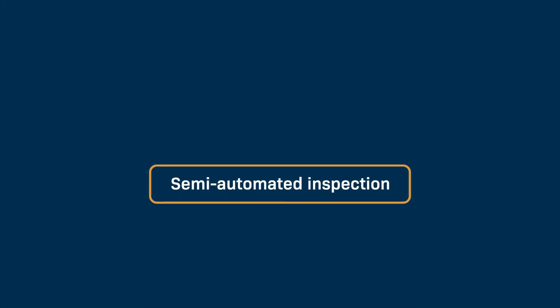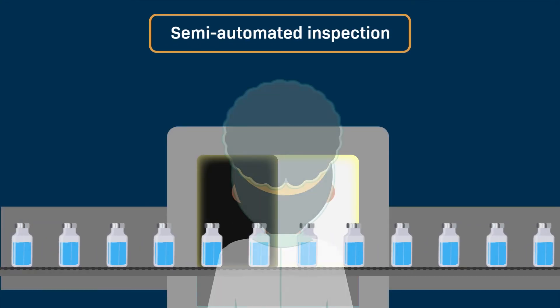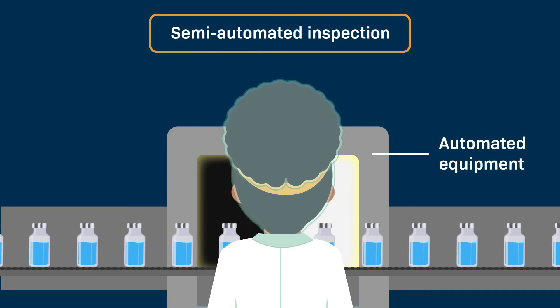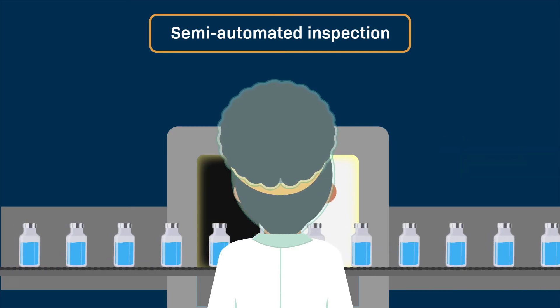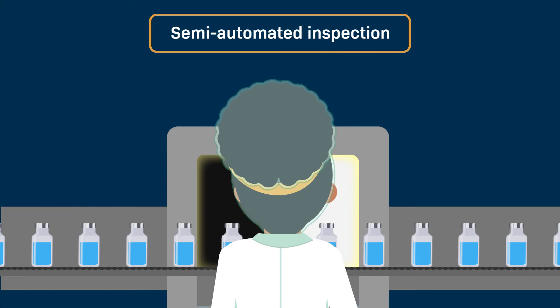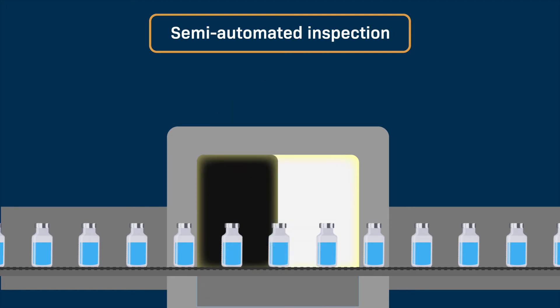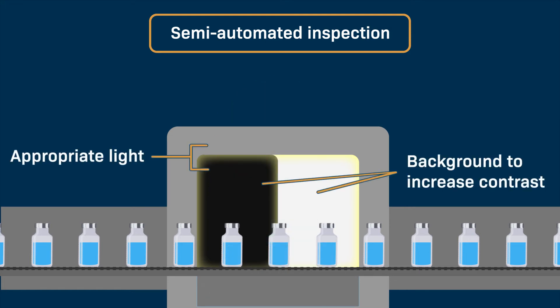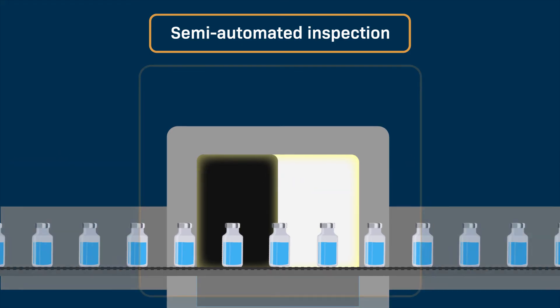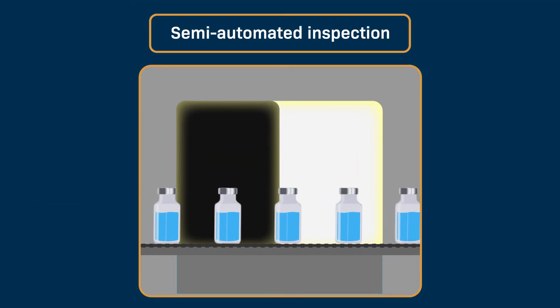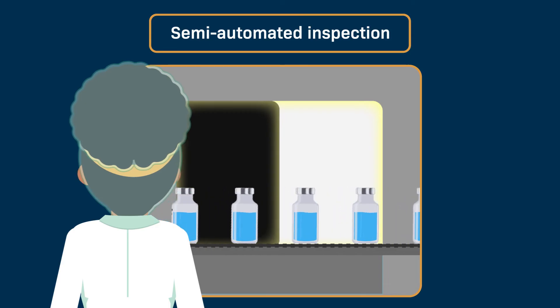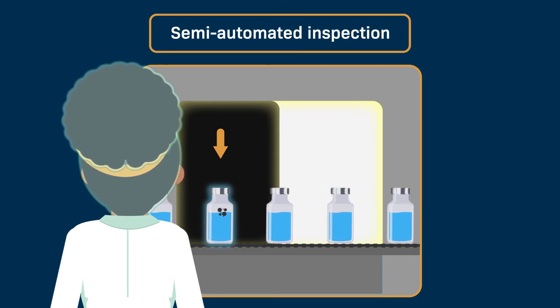In the semi-automated visual inspection process, a trained inspector is assisted by automated equipment. The automated equipment presents each container to the inspector. The inspection environment must have the appropriate light and background to increase contrast. The equipment is programmed to rotate the container, which allows the inspector to view all of the container surfaces in order to reveal defects. Based on their inspection, the inspector will make the decision to accept or reject the container.